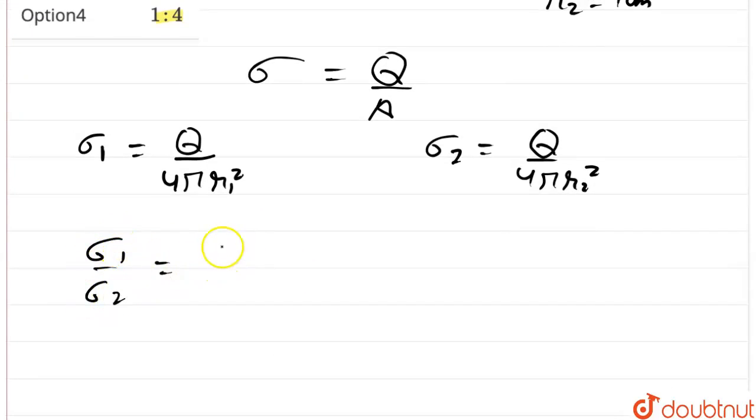Now these terms will get cancelled out and we get r2 upon r1 whole square. Now substituting the values of r1 and r2,